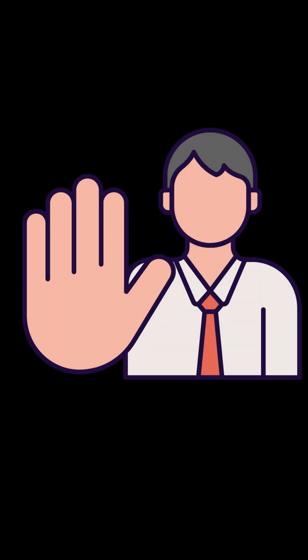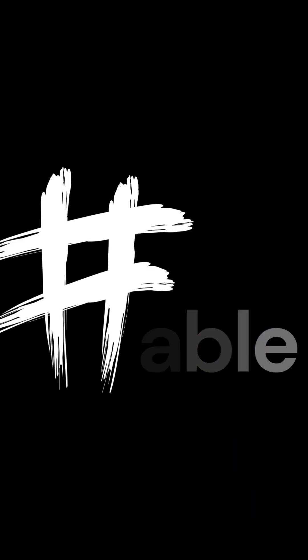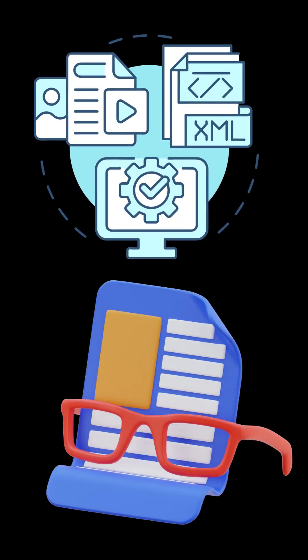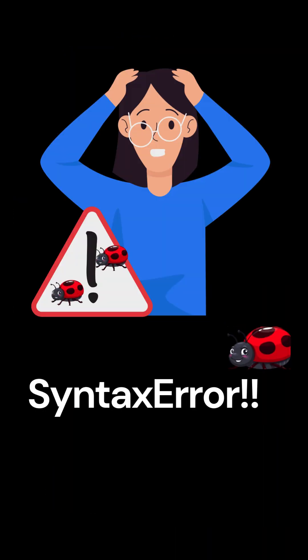Why immutability matters: 5. Safety — prevents accidental changes to critical data. 6. Hashable — can be used as keys in dictionaries. 7. Thread-safe — immutable objects are safer in multi-threaded environments. By using tuples for fixed data, you ensure your code is efficient, readable, and less error-prone.